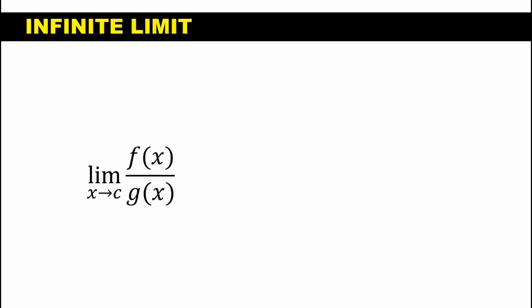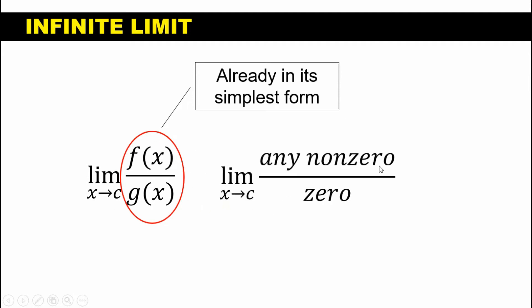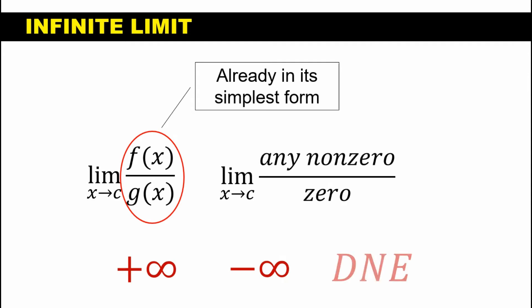Consider the limit of f(x) over g(x) as x approaches c, where this function is already in its simplest form. If we evaluate their individual limits and we get any non-zero limit for our numerator and a zero limit for our denominator as x approaches c, the limit is either positive infinity if f(x) increases without bound, negative infinity if f(x) decreases without bound, or DNE if the one-sided limits are approaching opposite infinity directions.